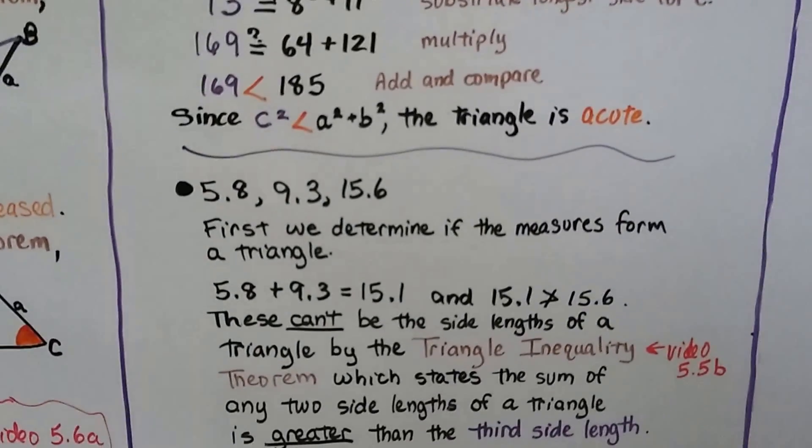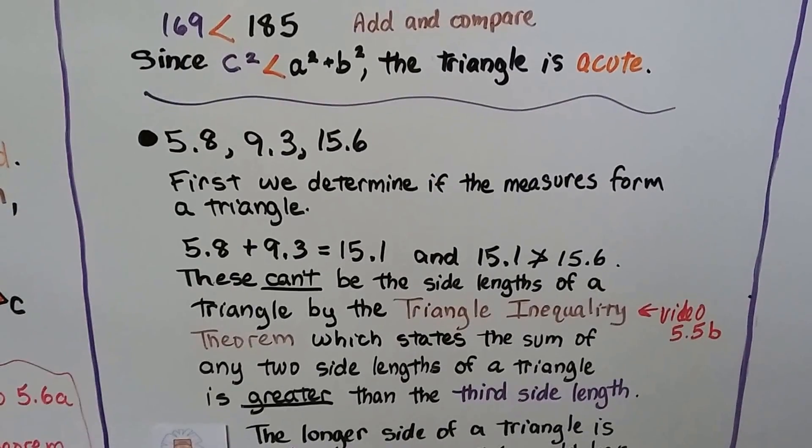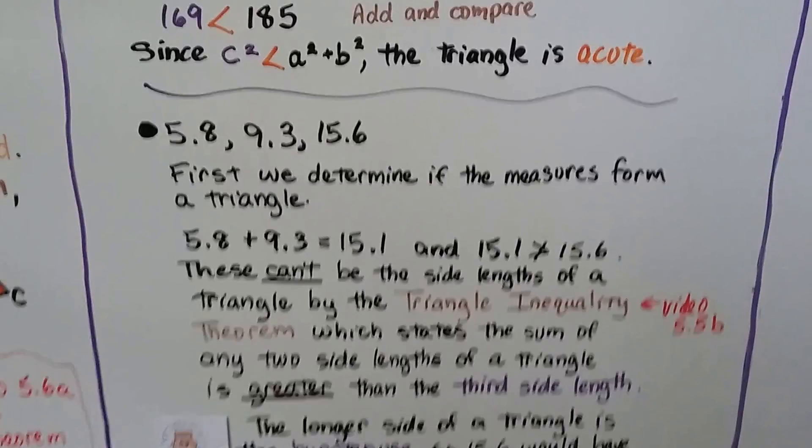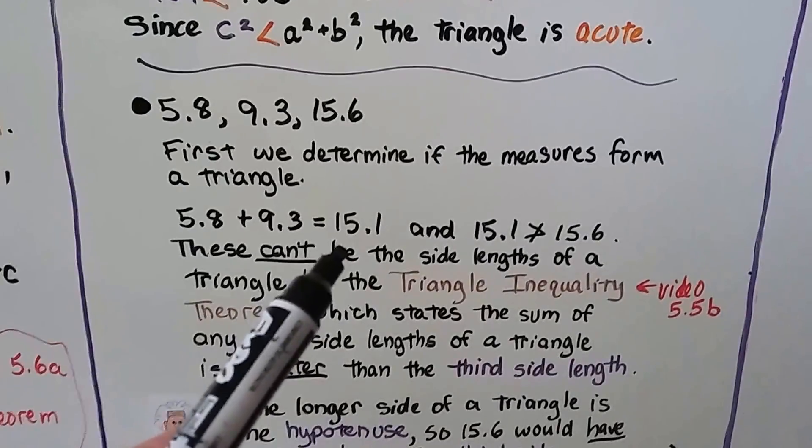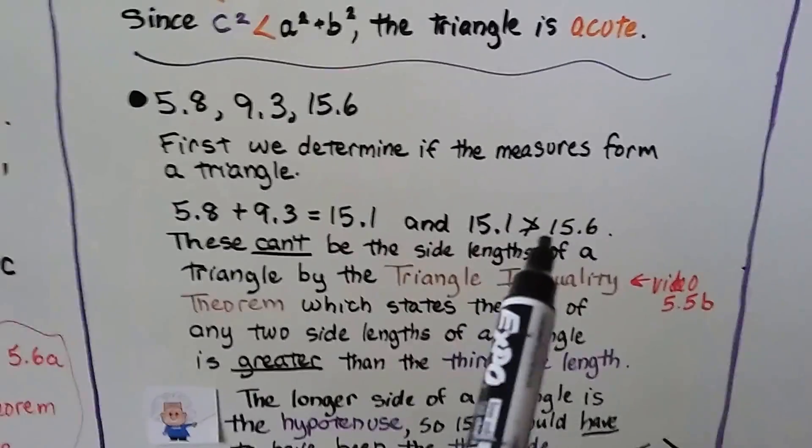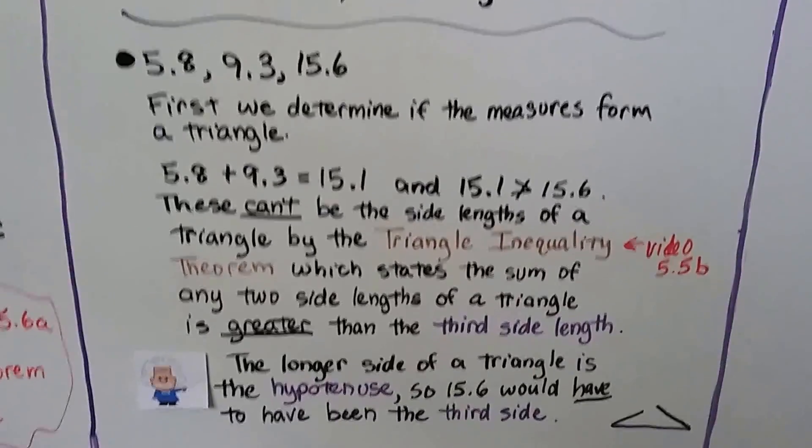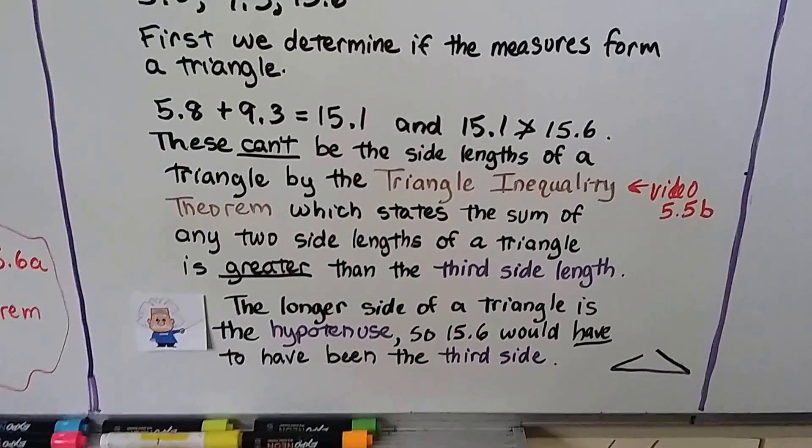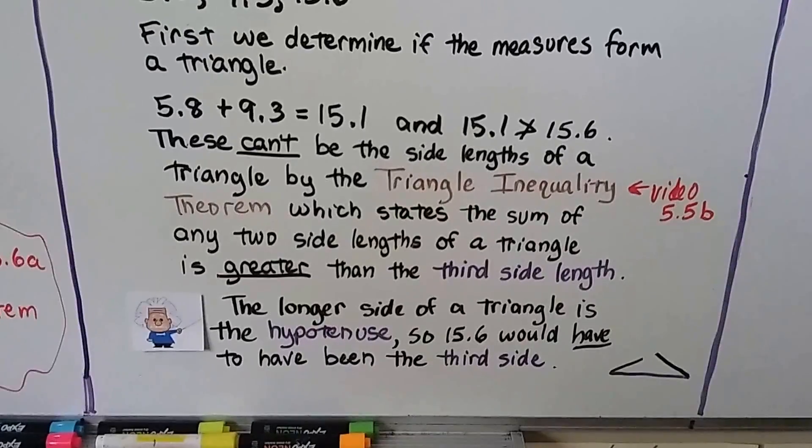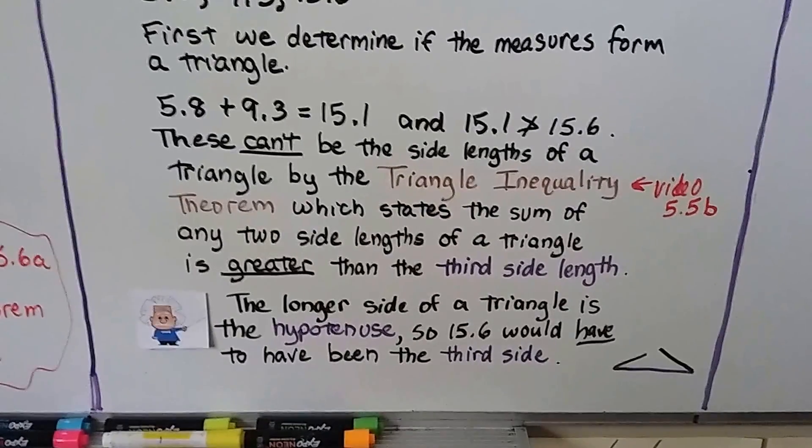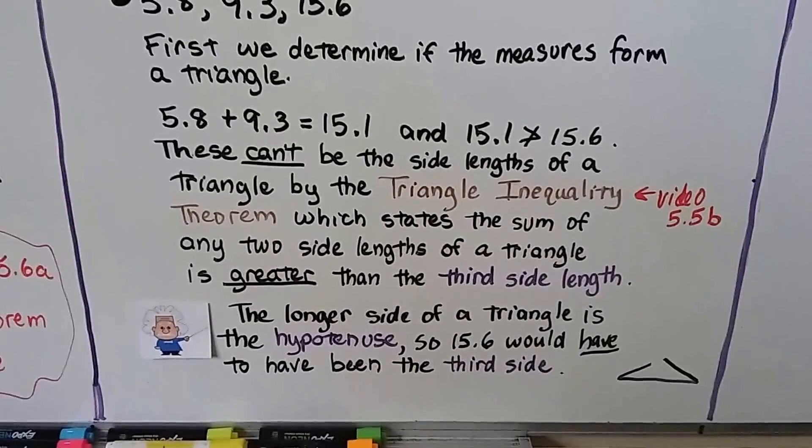Now we have 5.8, 9.3, and 15.6. First, we determine if the measures form a triangle. Well, 5.8 and 9.3 added together equals 15.1, and 15.1 is not greater than 15.6. These can't be the side lengths of a triangle by the triangle inequality theorem.